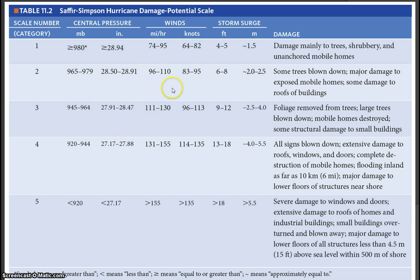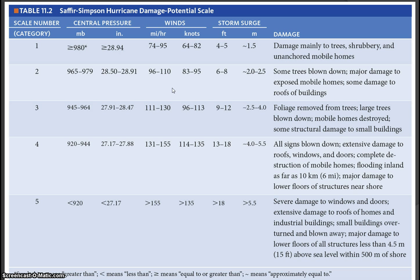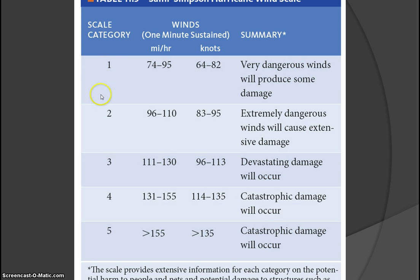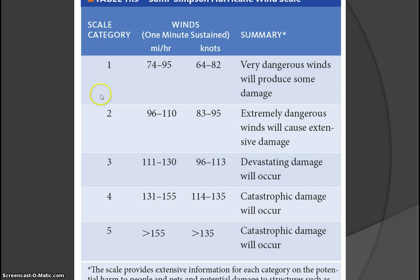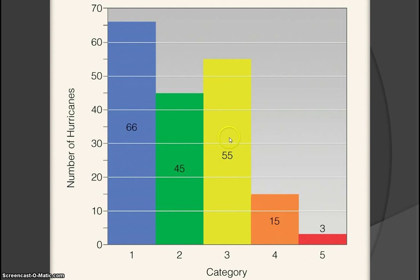The Saffir-Simpson scale categorizes hurricane damage potential in categories 1 through 5. A category 1 storm brings about a 4-foot sea rise; category 3 brings a 12-foot rise; category 5 can produce a 20-foot or higher sea rise combined with high tide. Hurricane Katrina was a category 5. Since 1900, there have been 55 category 3 storms reaching U.S. shores, 15 category 4 storms, and just 3 category 5 storms — making category 5 landfalls very rare.